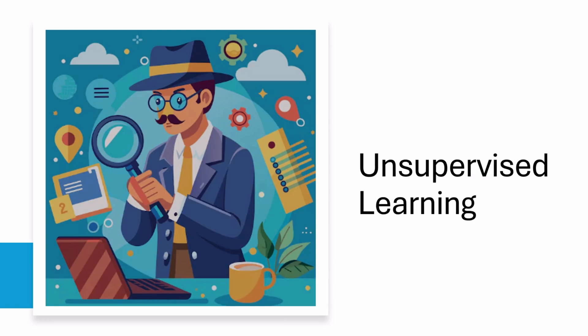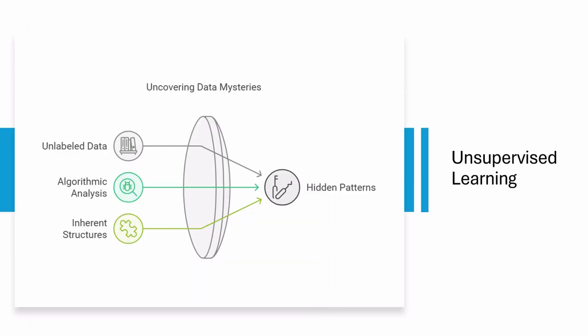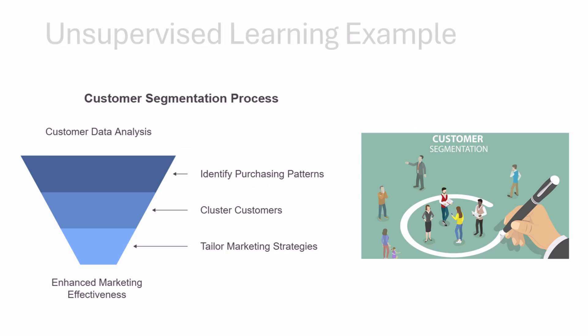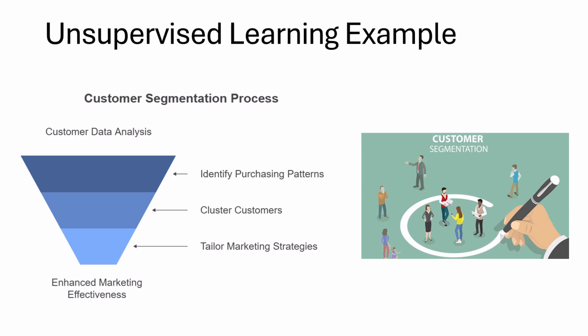Next, we have unsupervised learning, which is fundamentally different from supervised learning. Think of it as a detective trying to uncover hidden patterns in a mystery without any clues. The algorithm works with unlabeled data, aiming to discover inherent structures or relationships within the dataset. For example, consider a marketing scenario where a company wants to segment its customers.